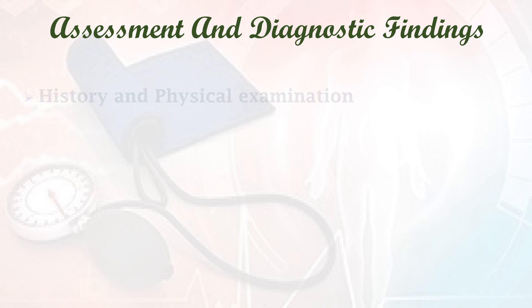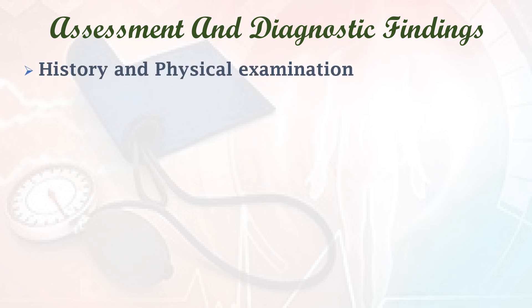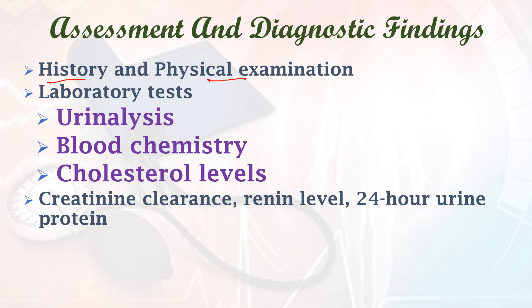Assessment and diagnostic findings: the first assessment method is history and physical examination. History collects subjective information about medical background and symptoms; physical examination identifies signs and symptoms. Laboratory tests include urine analysis, blood chemistry, cholesterol levels, creatinine clearance, renin level, and 24-hour urine protein assessment. Electrocardiogram and echocardiogram are also used. These are the common diagnostic tests to rule out hypertension.